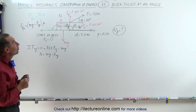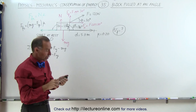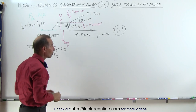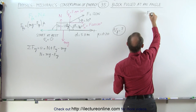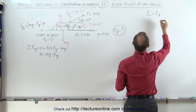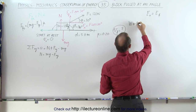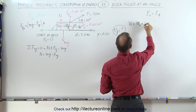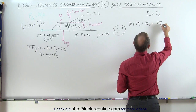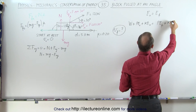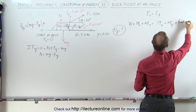Now we're ready to set up the equation to calculate the final velocity. We'll use the energy conservation equation that says initial energy must equal final energy — meaning any work put into the system, plus any initial potential energy, plus any initial kinetic energy, must equal the final potential energy, plus the final kinetic energy, plus any heat lost by overcoming friction.